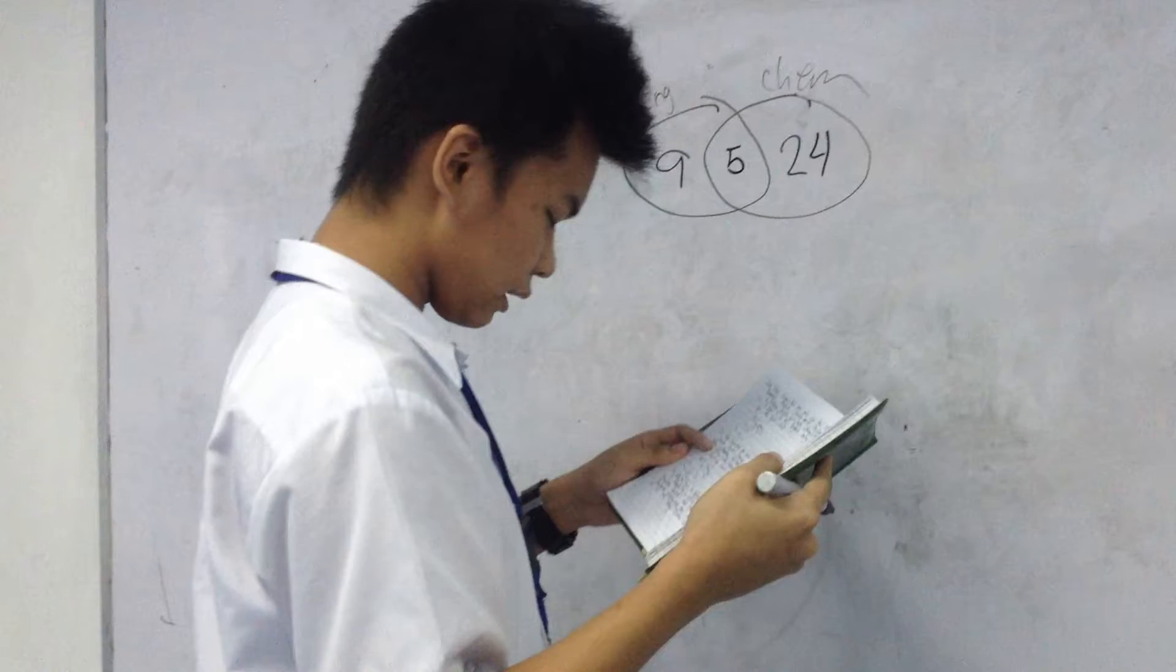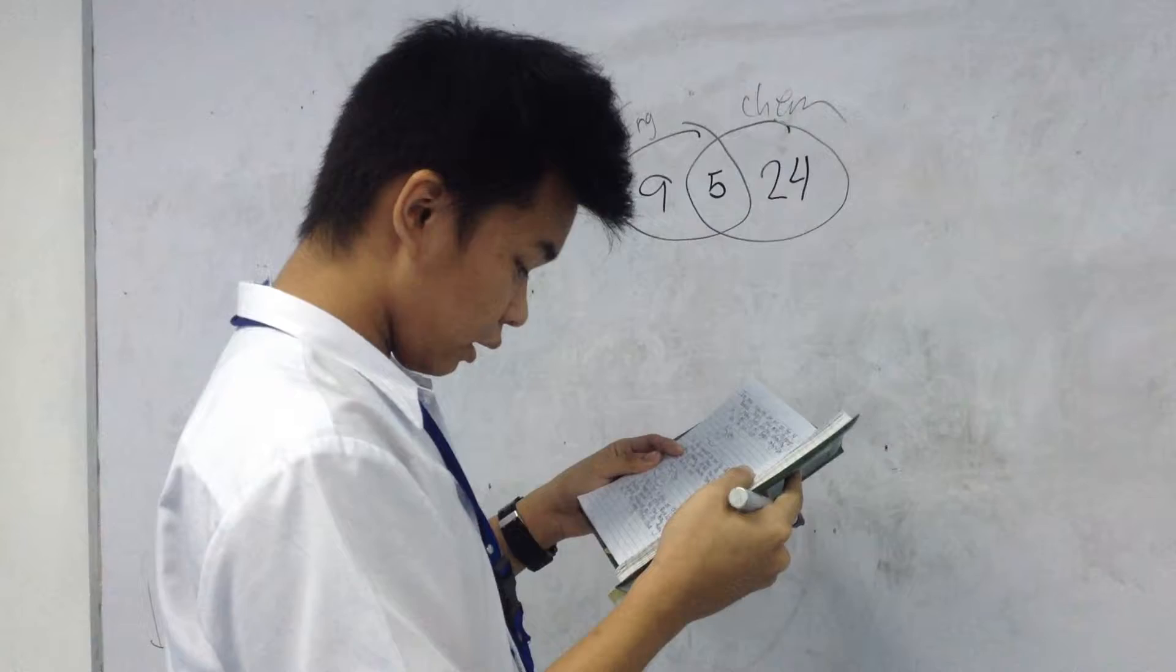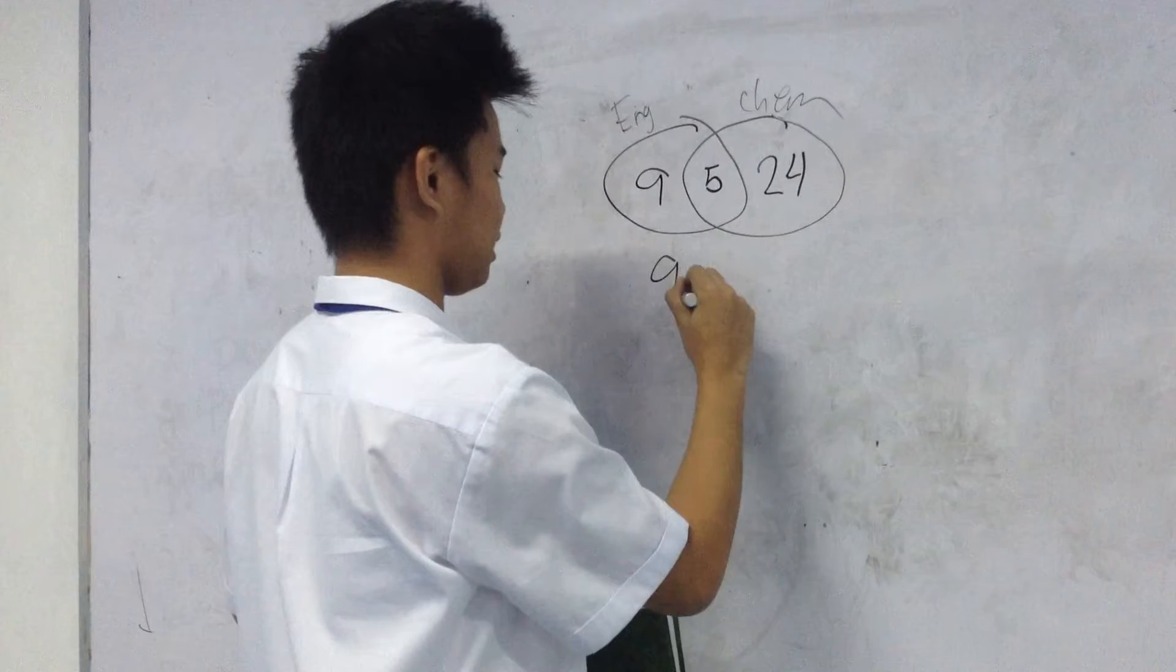For the remaining two students out of 40, having accounted for 38, they must be the ones taking neither class.